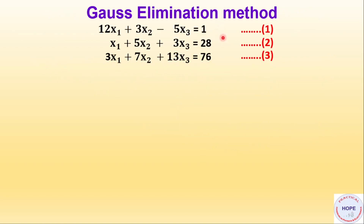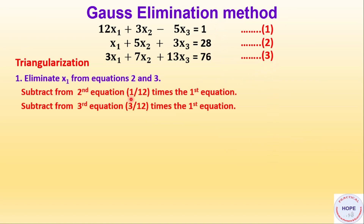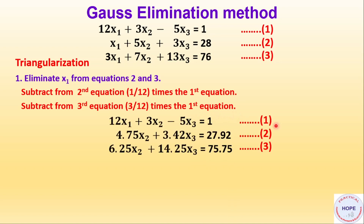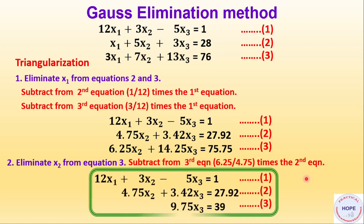Let's take an example. Say these are the equations. First we do the triangularization. We will eliminate x1 from the second and third equations. We subtract from the second equation 1/12 times the first equation, and subtract from the third equation 3/12 times the first equation. We get three equations where the second and third have no x1. Then we eliminate x2 from equation 3 by subtracting 6.25 divided by 4.75 times the second equation. We get three equations — this is how we do the triangularization.